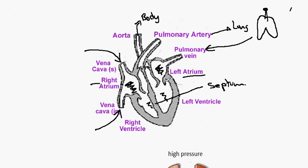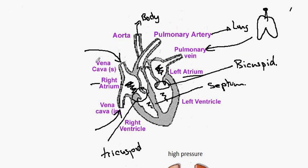Draw your attention to the valve here which is called the bicuspid valve, and the valve on the right side of the heart is called the tricuspid valve. There are further valves here and here, and these are called the semi-lunar valves.